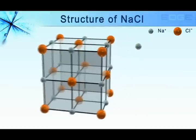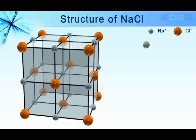Let's see the structure of NaCl. The radius of a sodium ion is 0.95 angstrom and that of a chloride ion is 1.81 angstrom. The radius ratio of sodium ion and chlorine ion comes out to be 0.526.